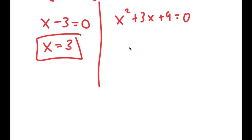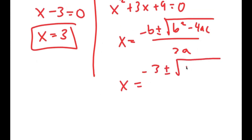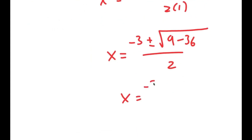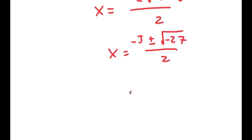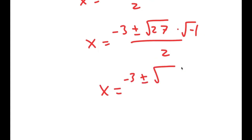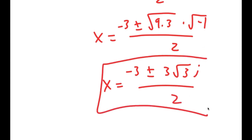For x squared plus 3x plus 9 equals 0, I use the quadratic formula: negative b plus or minus the square root of b squared minus 4ac, all over 2a. This gives negative 3 plus or minus the square root of 9 minus 36, all over 2, which is negative 3 plus or minus the square root of negative 27 over 2. Since 27 equals 9 times 3, the square root of 27 is 3 root 3, and the square root of negative 1 is i. So the two complex solutions are x equals negative 3 plus or minus 3i root 3, all over 2.